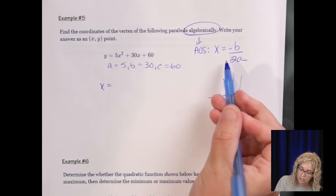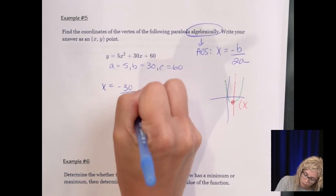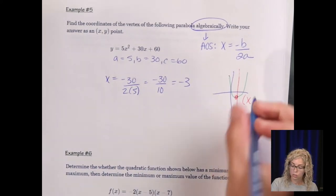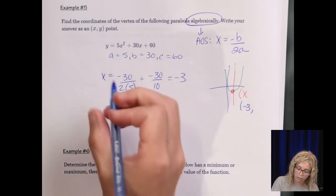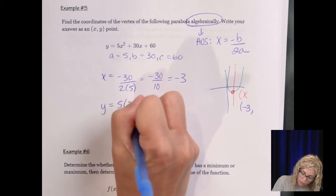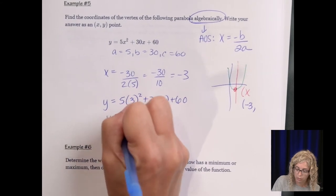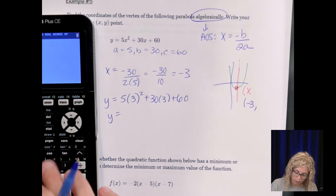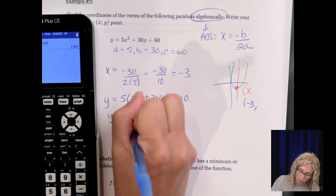So let's do, we've got A is 5, B is 30, and C is 60. Notice we don't even need the C. So the X value is negative B, so negative 30 over 2A or 2 times 5. So negative 30 over 10 is a negative 3. So our vertex is negative 3, and then just plug the 3 in for X. We could type this whole line into our calculator to get the Y value.